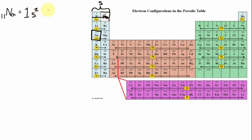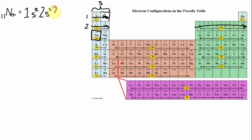The first energy level is filled. The next place to put an electron is the second energy level. The first place in the second energy level is the S orbital, which can hold 2 electrons — so that's 2s2. The next place in the second energy level is the P orbital, which can hold 6 electrons, so let's fill it all up. The P orbital is now filled, giving us 2p6.